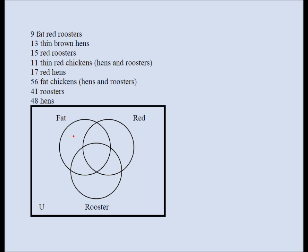You really have to understand what each of these eight regions means — you should be able to say it in English. These are thin brown roosters. These are fat brown hens — inside fat, outside rooster, outside red. These are red thin hens. These are fat red hens. These are fat brown roosters. These are red thin roosters. And these are thin brown hens.